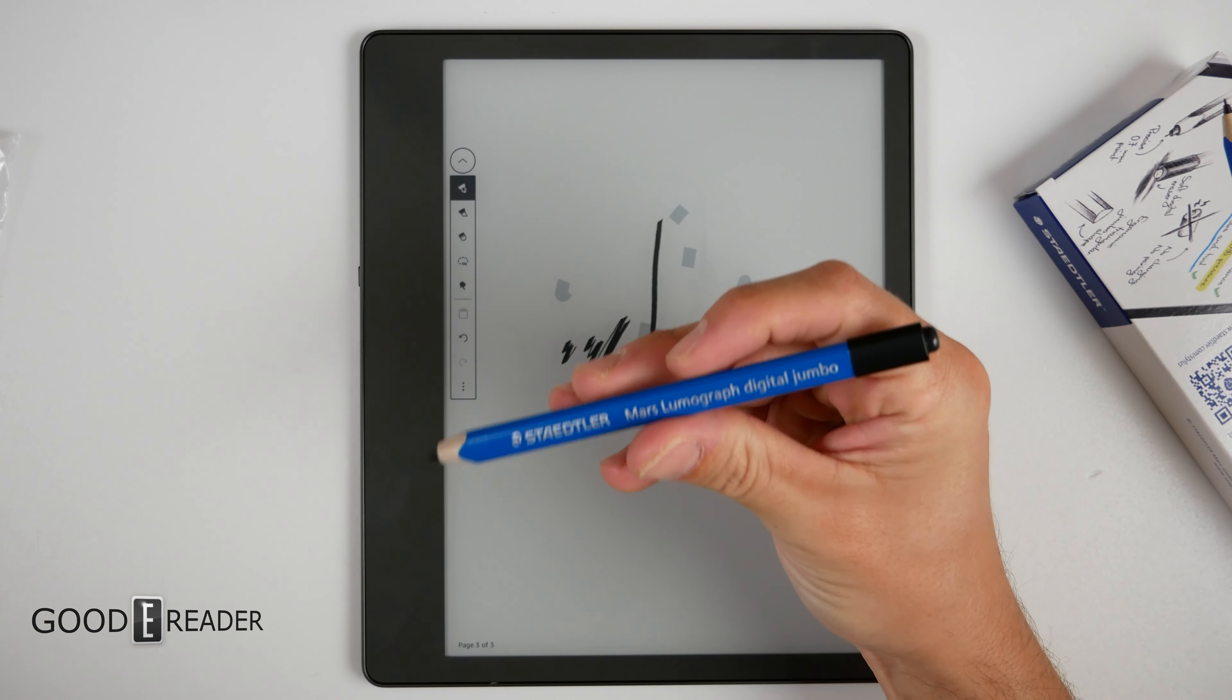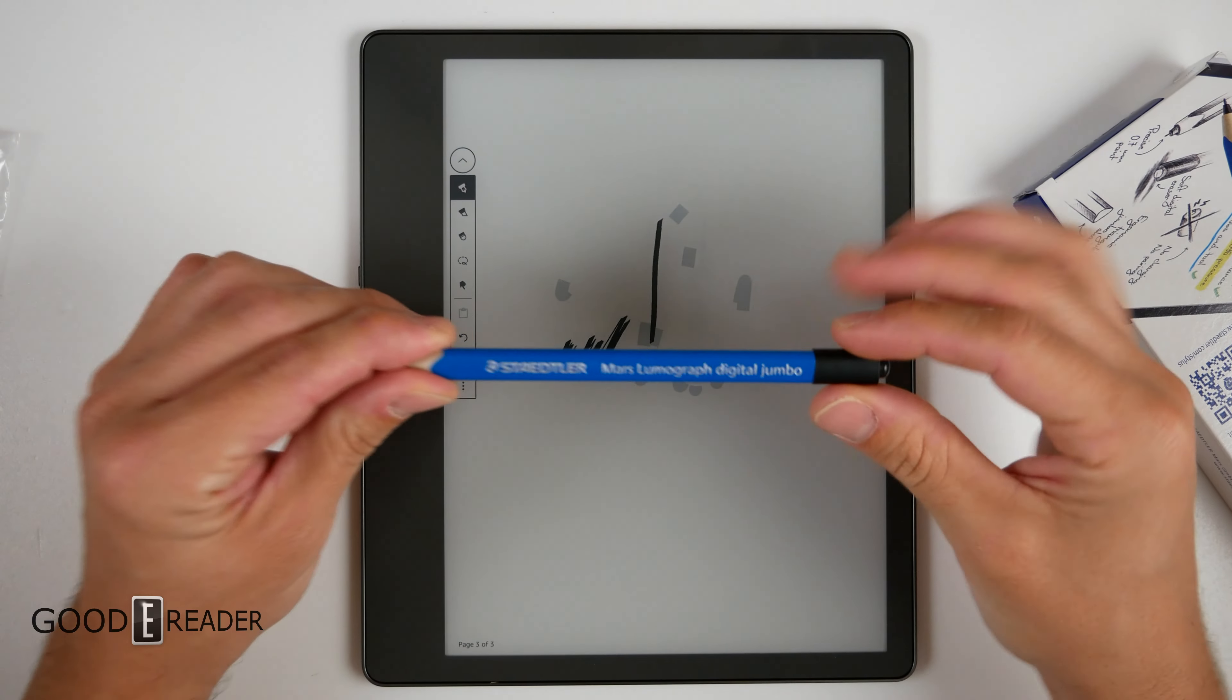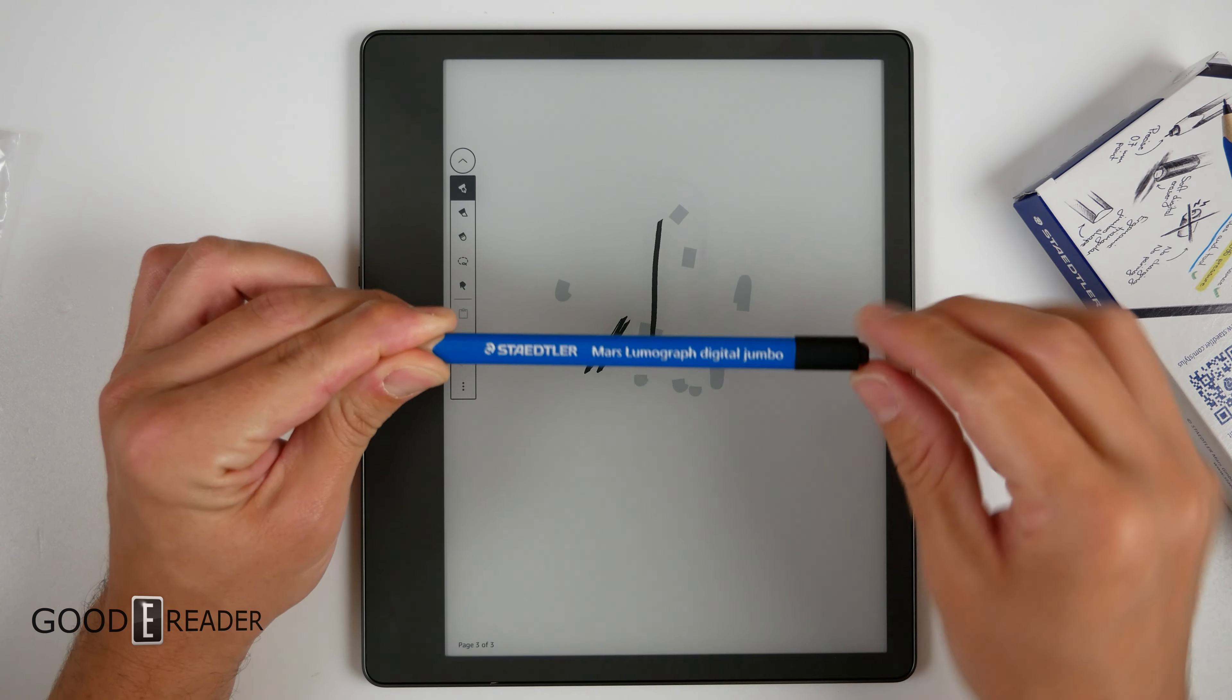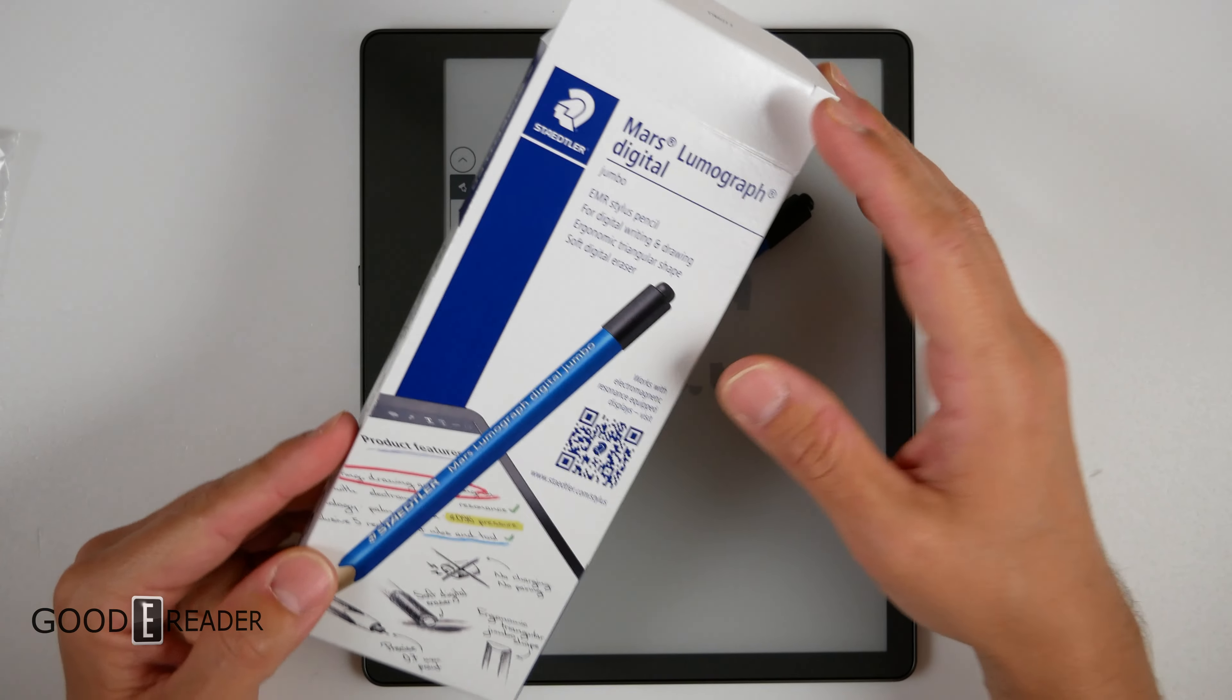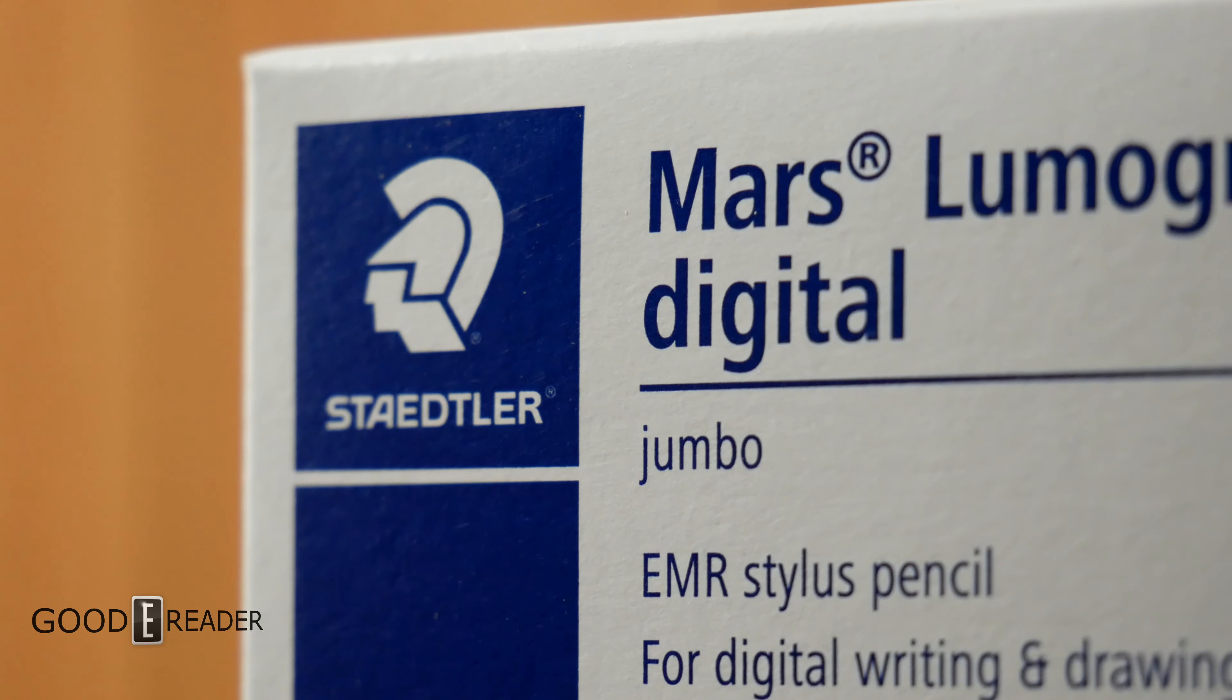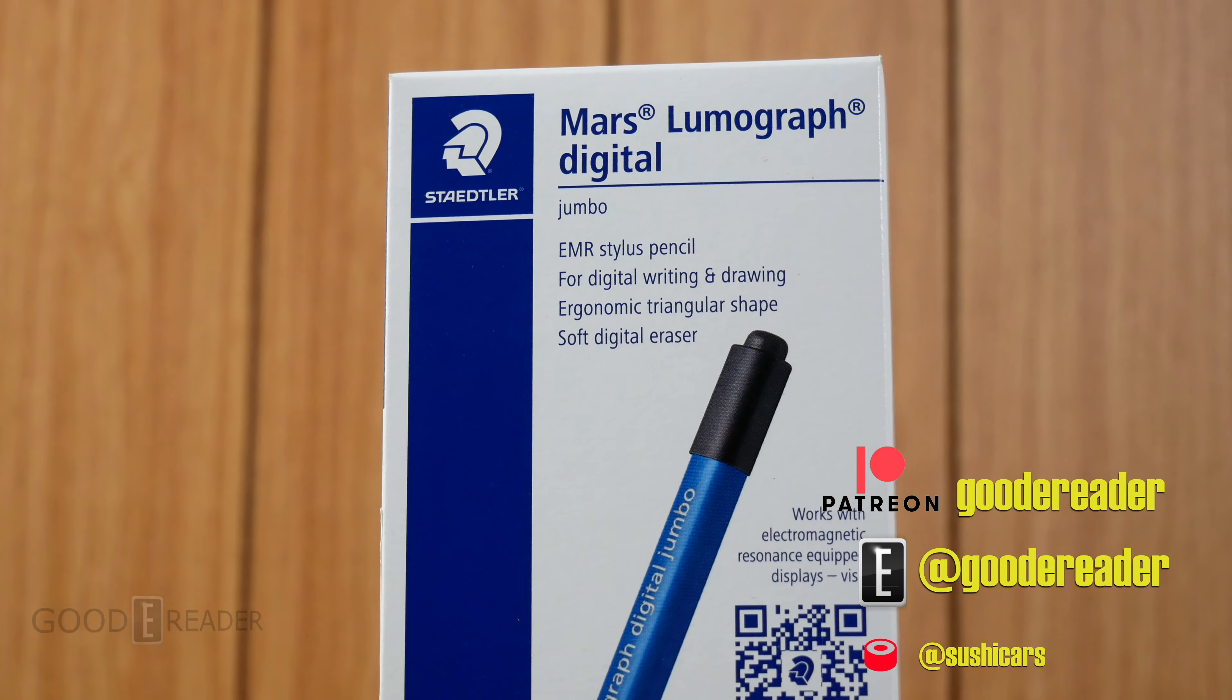So this is the Stadler Mars Lumograph Digital Jumbo. It is a massive name. Look at that name. It fills the entire length of the pen. It is a really cool pen. I love that they have a jumbo variant. I didn't know they had one of these until they sent it to us from Germany. These are made in Germany. This is a great set if you want to grab one. It's available on our site.